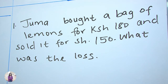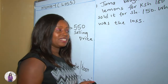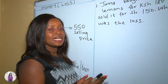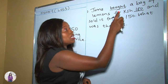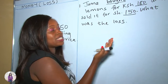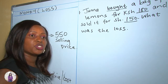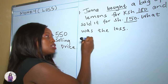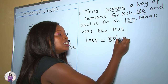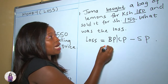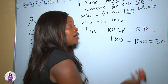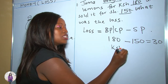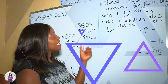Let's get more examples. We are told that Duma bought a bag of lemons for Kenyan shillings 180 and sold it for Kenyan shillings 150. What was the loss? From our first example, for you to make a loss you have to sell less than the buying price. The word 'bought' tells us this was the buying price, and the selling price is less than the buying price, so you can predict a loss. Loss equals buying price or cost price take away selling price. Cost price is 180 shillings take away selling price of 150 shillings: 180 minus 150 equals 30 shillings. Therefore the answer is he made a loss of Kenyan shillings 30.